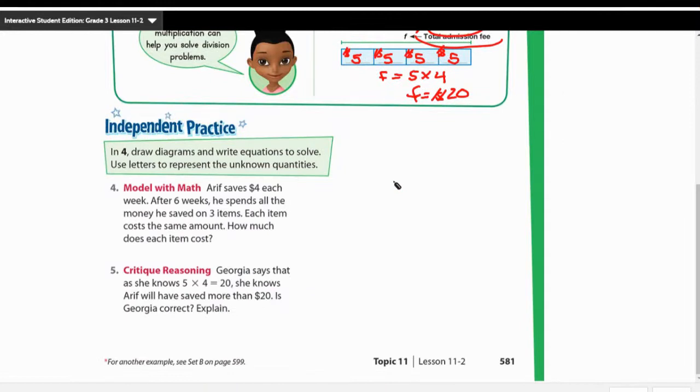So moving down to independent practice, it says in four, draw diagrams and write equations to solve. Use letters to represent unknown quantities. The reef saves $4 each week. After six weeks, he spends all the money he saved on three items. Each item costs the same amount. How much does each item cost?